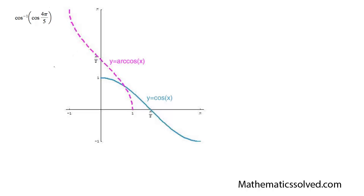I'm wanting to find the exact value of this function right here — inverse cosine of cosine of 4π over 5. The reason I have this graph here is to conceptually show you that the answer you're going to get out is 4π over 5. But why is that?